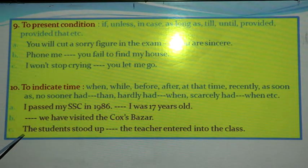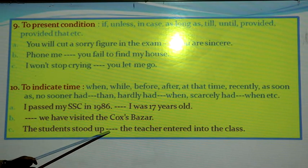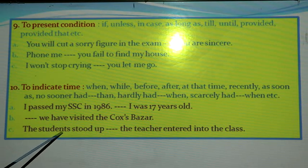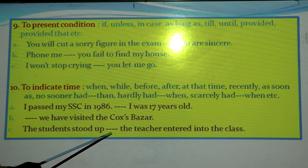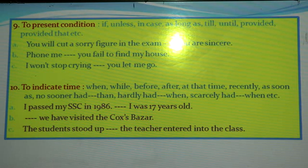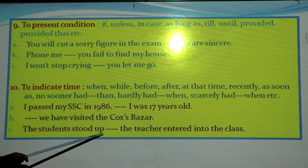Number C: 'The students stood up — the teacher entered into the class.' In the gap we can use 'as soon as': 'The students stood up as soon as the teacher entered into the class.' So in the gap we can use 'as soon as,' which is the conjunction or sentence connector used here.